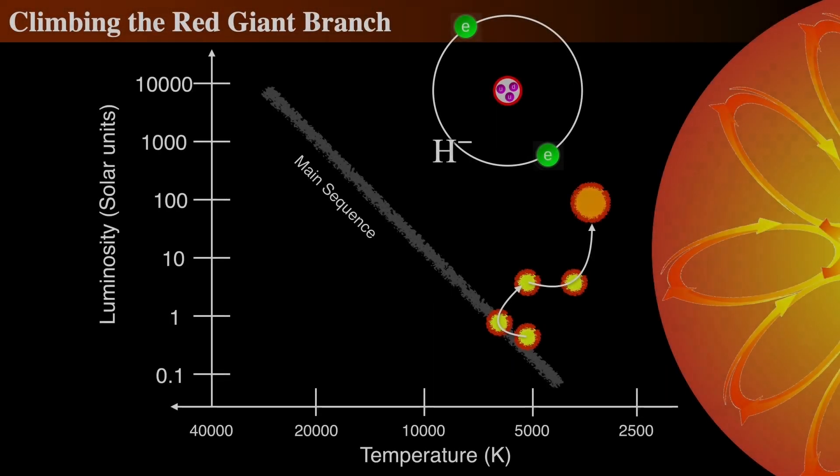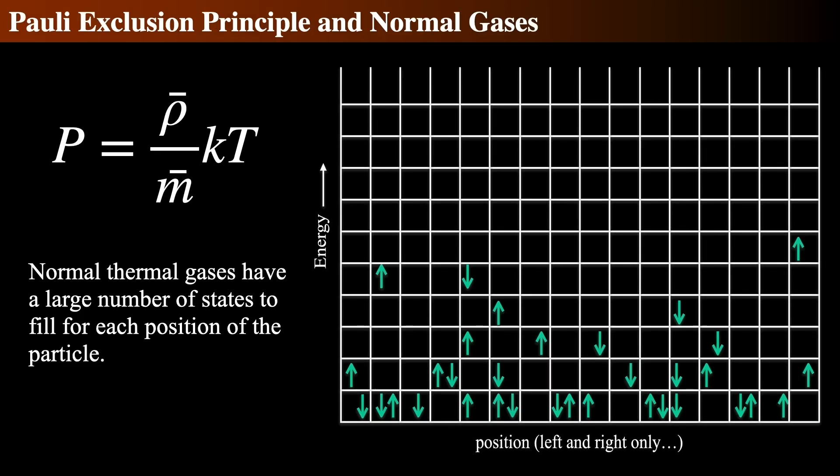In a desperate attempt to keep the star from collapsing, and as it does so, it's starting to use a new trick: electron degeneracy. In order to know what electron degeneracy is, we first have to look at normal gases. Well, what's a normal gas?